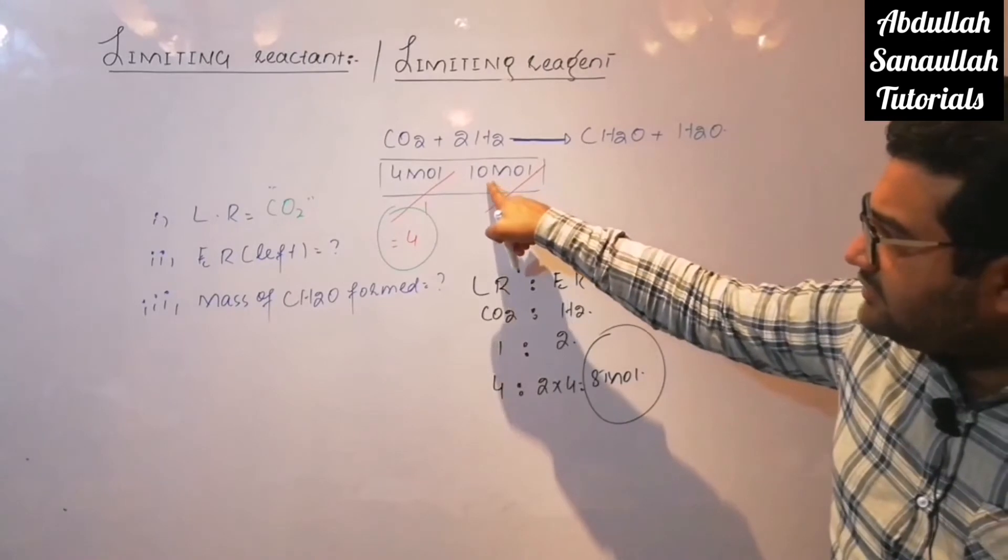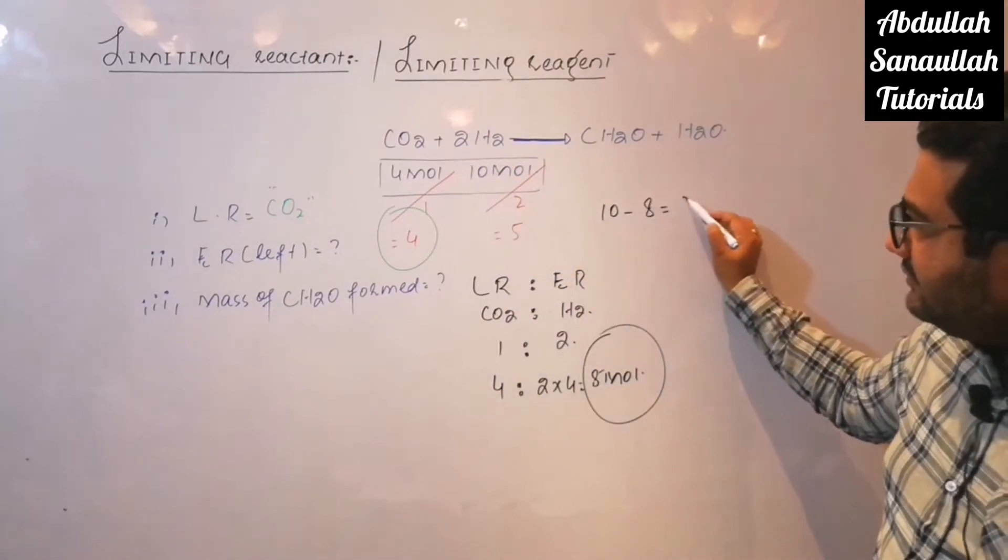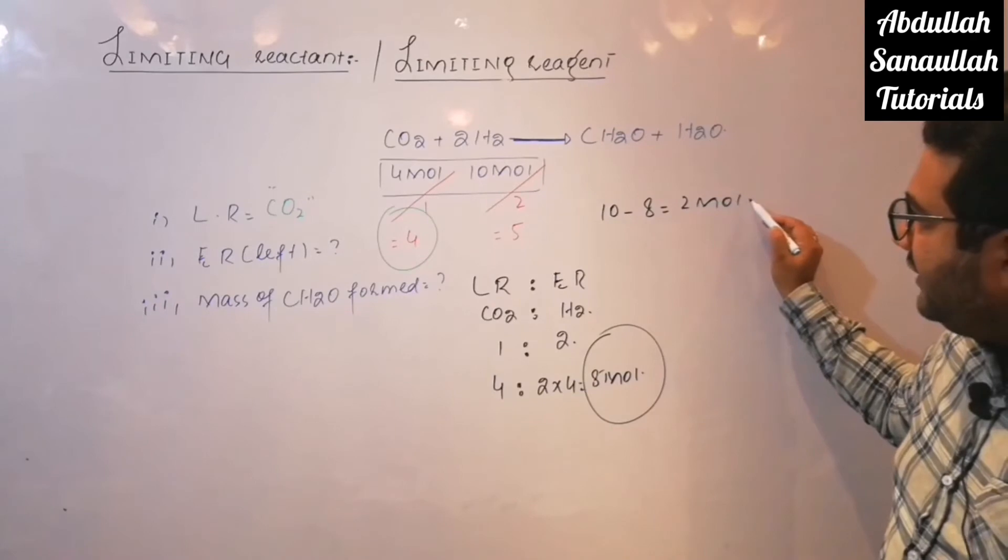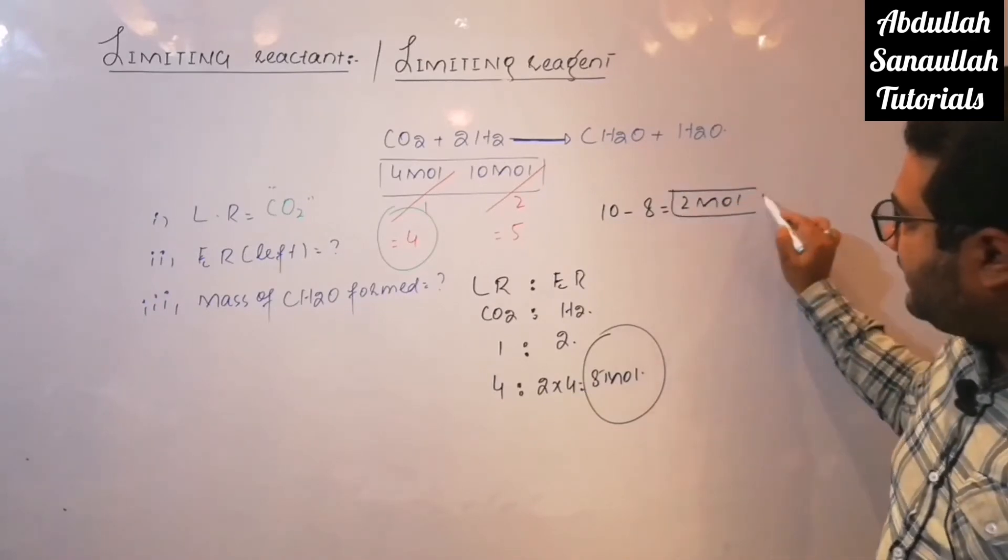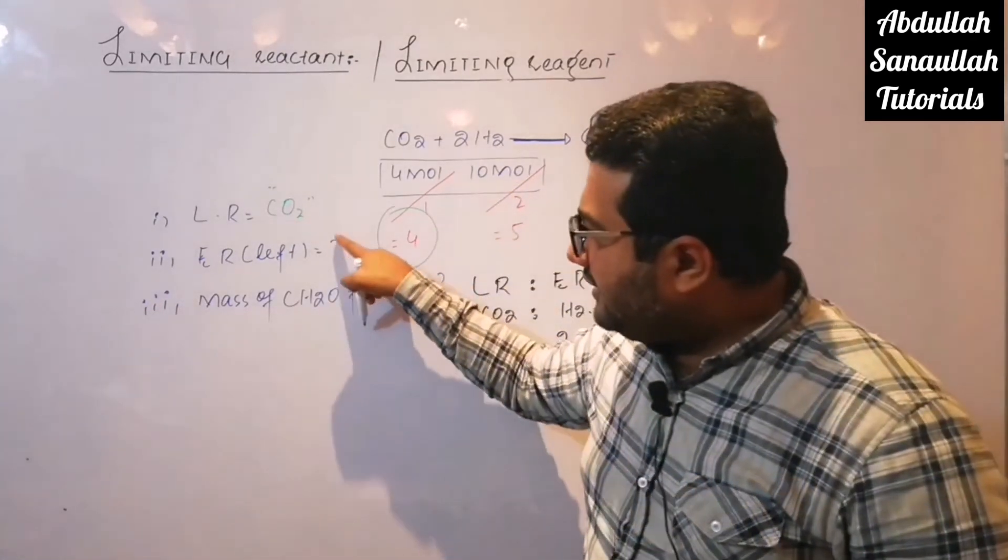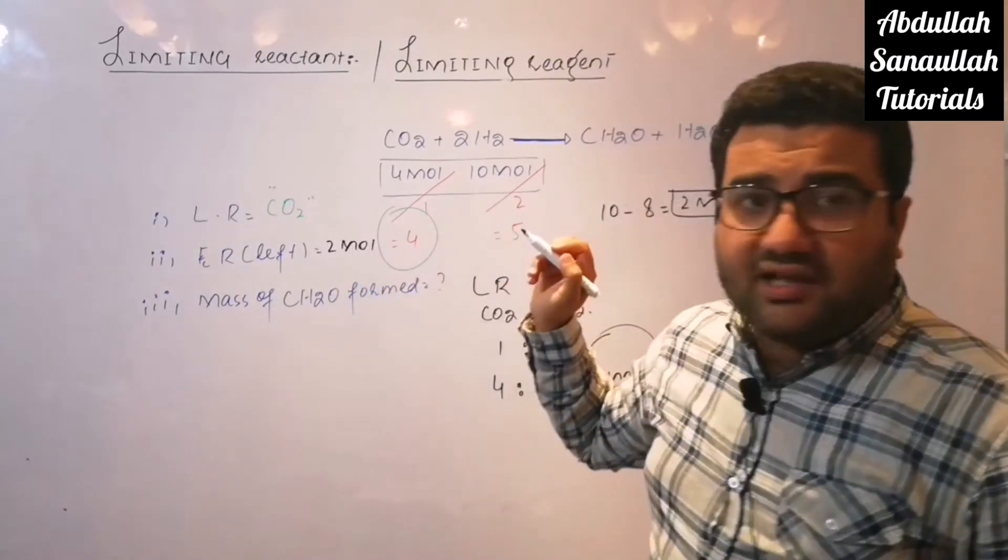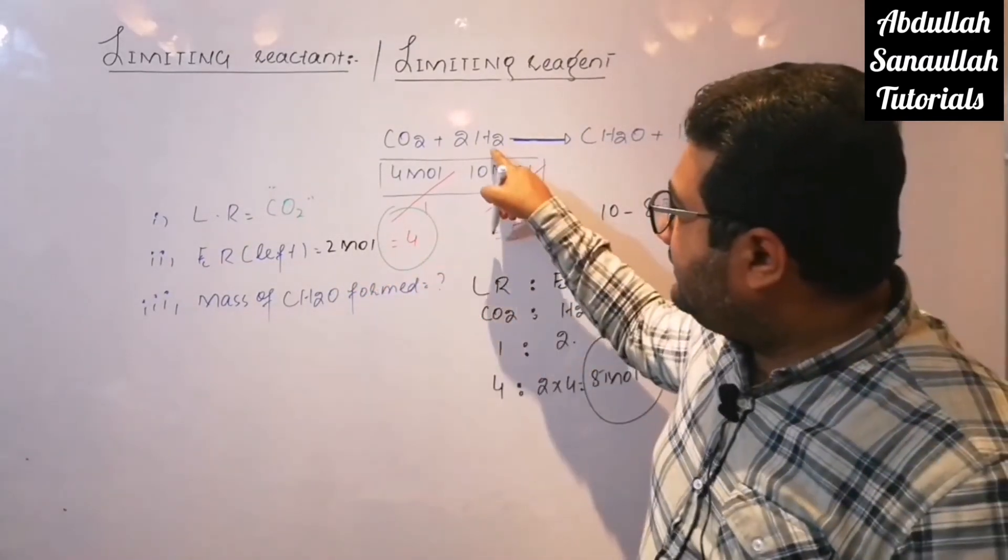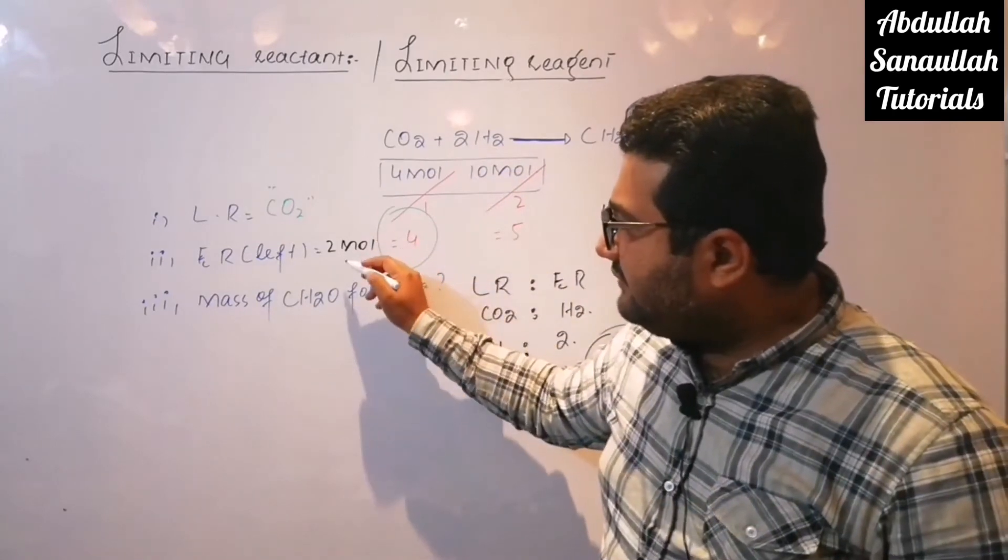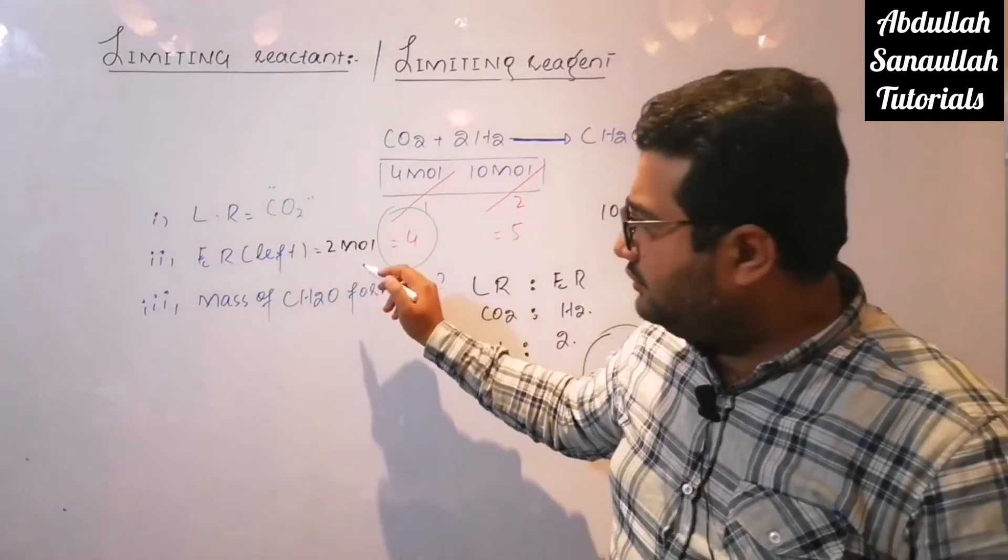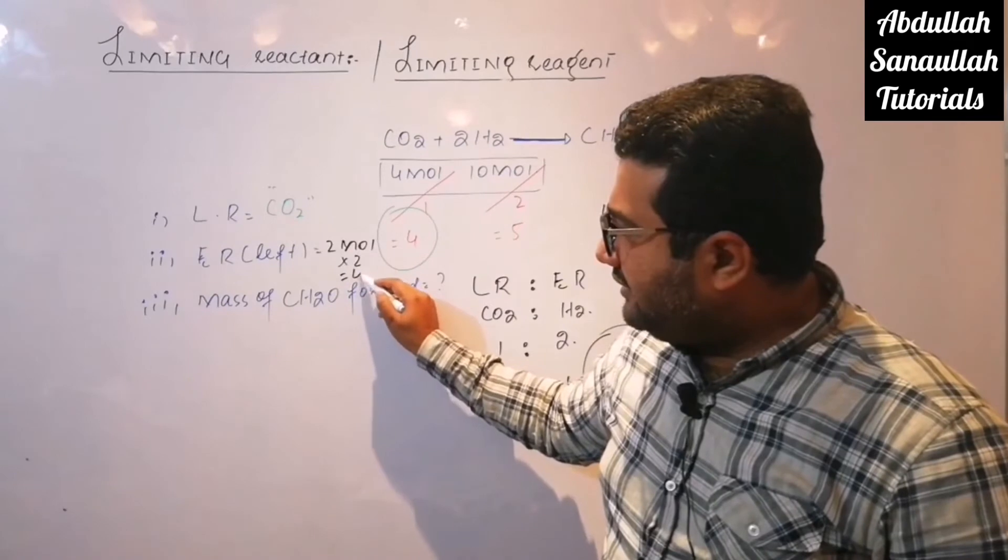The total moles were 10 moles. Eight are used. So two moles are left behind. Two moles of hydrogen are left behind. So excess reactant left is two mole. But if the mass is required, then you will multiply it with the molar mass of hydrogen. That is 2.016. So after multiplying, we will get four grams.